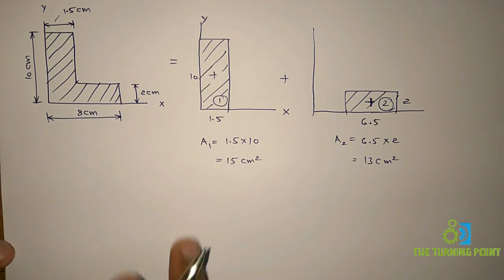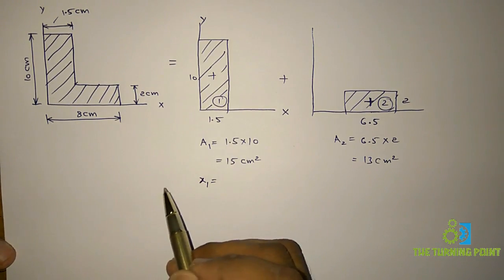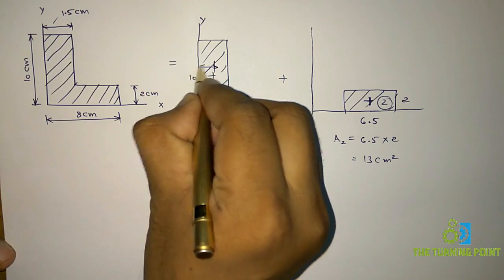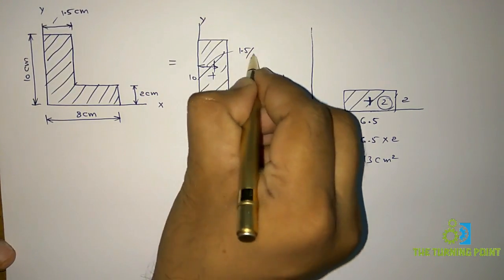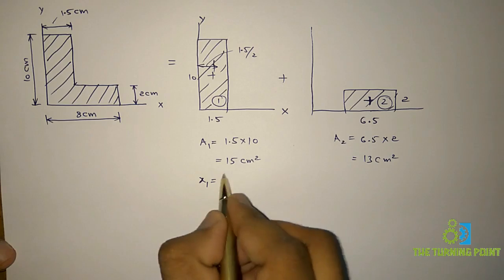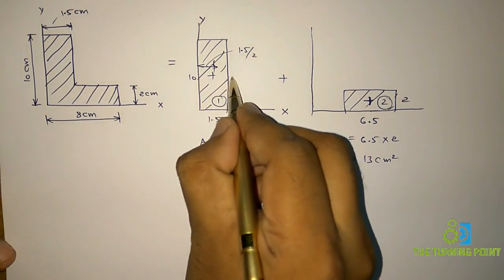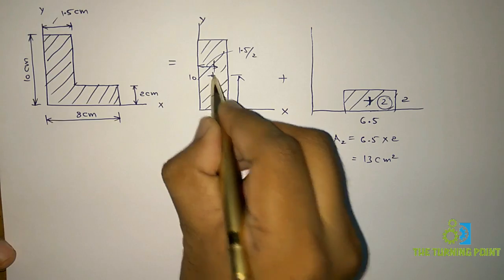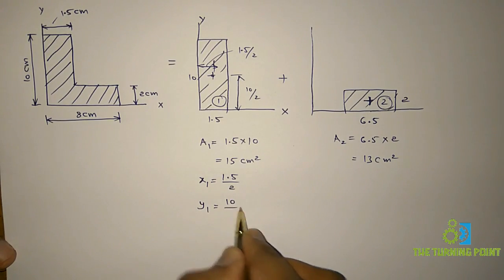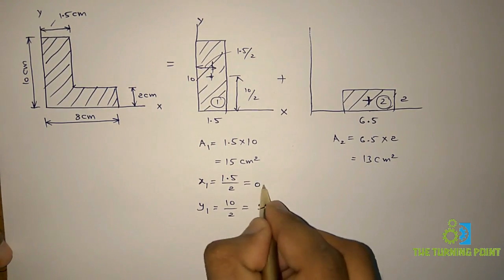So first we will find the individual centroidal coordinates of these two geometries. For the x centroidal coordinate of the first rectangle: for a rectangle the centroidal coordinates are base by 2 and height by 2. So x1 is base by 2, which is 1.5 divided by 2 — the perpendicular distance from the y-axis — giving 0.75. Y1 is height divided by 2: 10 divided by 2, which is 5.